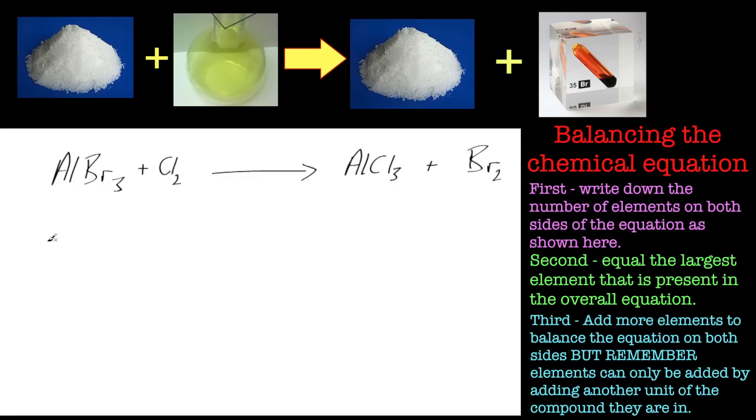As before, let's write these out. We've got aluminium—just one of those—bromine, three of them, and two chlorines. That's on the left-hand side. On the right-hand side we've got aluminium. Let's stick to the bromines on that level, so put bromine—we've got two of them—and chlorines, we've got three.